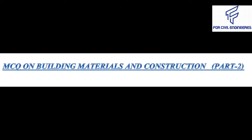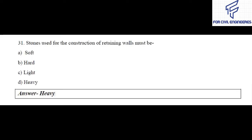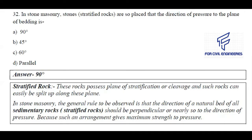So let's start. Question number 31: Stone used for the construction of retaining wall must be — soft, hard, light, or heavy? The right answer is heavy. Question number 32: In stone masonry, a stone which is a stratified rock is so placed that the direction of pressure to the plane of bedding is — 90 degrees, 45 degrees, 60 degrees, or parallel? The right answer is 90 degrees.